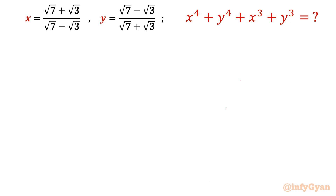Hello everyone, welcome to InfiJaan. In this very exciting video on algebraic expressions, we are going to simplify x⁴ + y⁴ + x³ + y³, given that x = (√7 + √3)/(√7 − √3) and y = (√7 − √3)/(√7 + √3). While solving, I will use algebraic manipulations and identities to conclude our result. So let's get started.